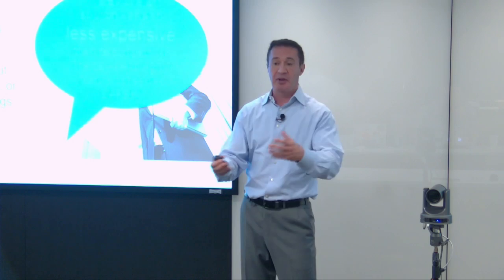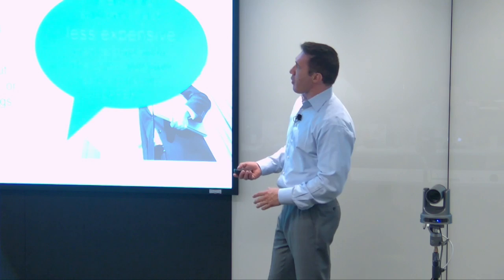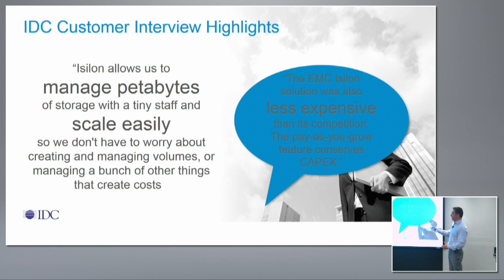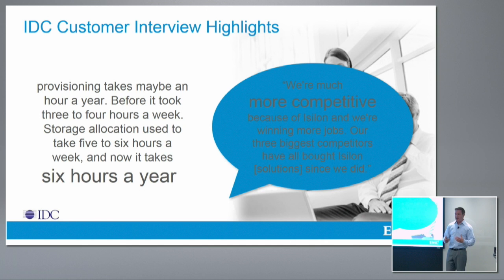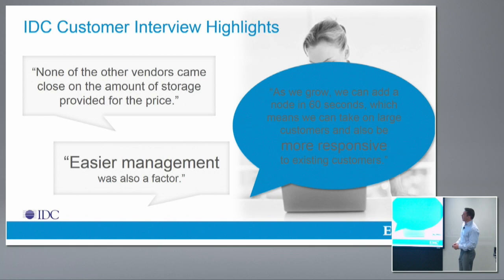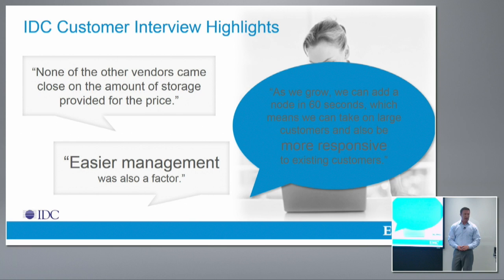Customers look at our products and say this allows you to manage petabytes at scale with a tiny staff. You don't have to worry about creating and managing volumes or other things that create cost. Capacity provisioning that used to take three to four hours a week and storage allocation that used to take five to six hours a week now takes six hours a year. Customers tell us these are just simple operations. One of the reasons people like Isilon is that the architecture is just so simple to use and manage. And the raw-to-usable ratio — we can get into the 80 to 90% range in terms of usable storage, which is pretty unique in the industry.